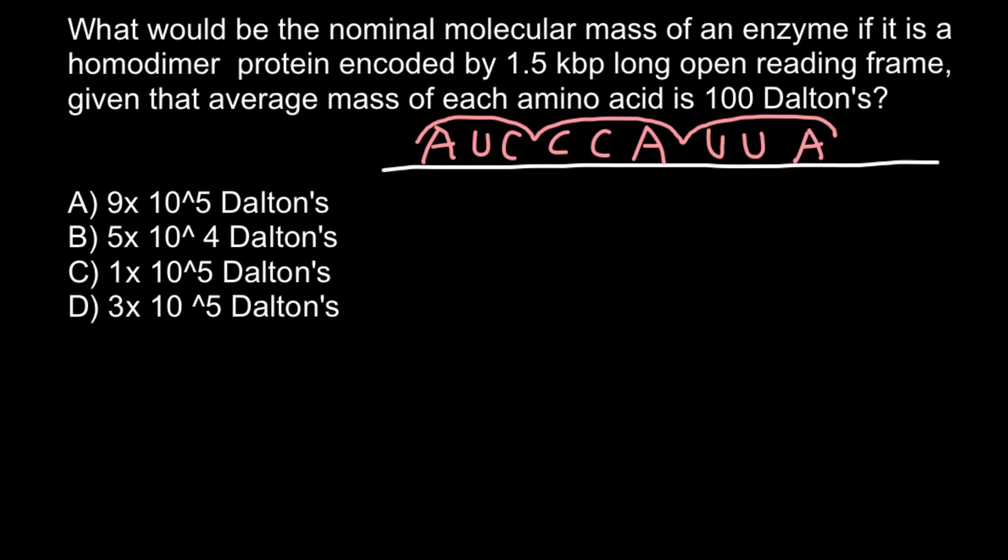Our calculations are going to be very simple. If we have 1.5 kilobase pairs long messenger RNA, kilo stands for one thousand, just like in kilogram. We have to multiply 1.5 by 1000 and we'll find how long the coding sequence is. The coding sequence equals 1500 nucleic acids of the messenger RNA.